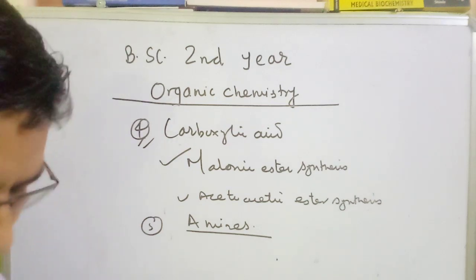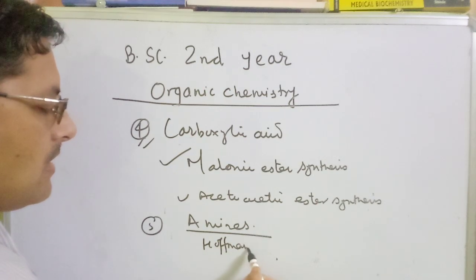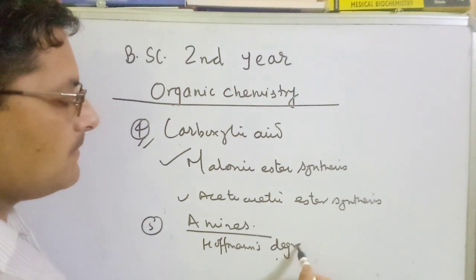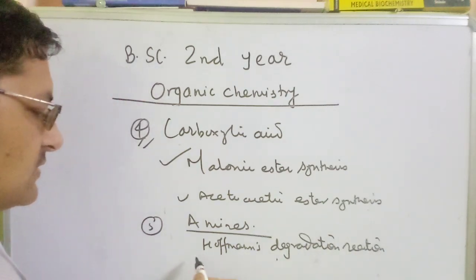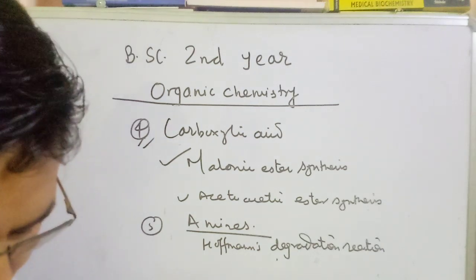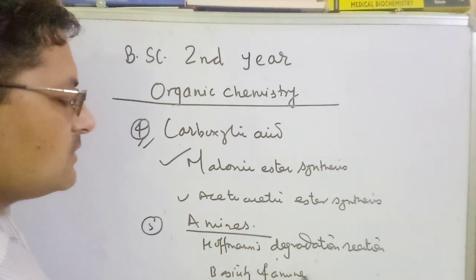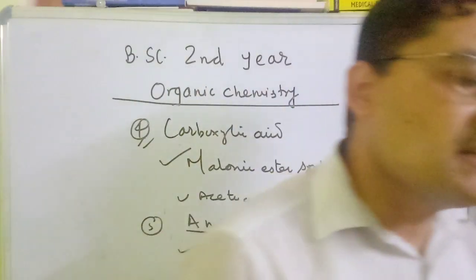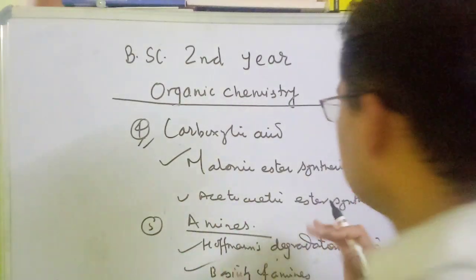In the Amines chapter, there are two different phases of amines. This is the Hofmann degradation reaction, also called Hofmann hypobromide reaction. This is the basicity of amines. We will explain how basic the amines are. If the amine is a base, then we will explain how basic it is. We will explain the basicity and the Hofmann degradation reaction.